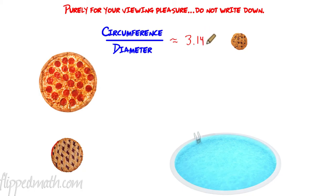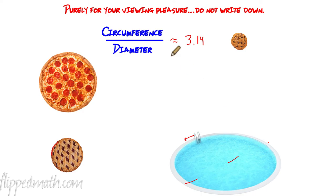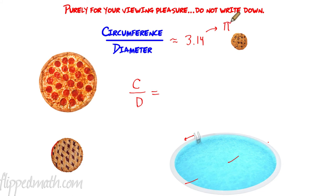That number was 3.14. Depending on how well they measured it might be slightly different, but it was true for every circle. They walked around, measured all the way around the outside, measured across the very middle, and circumference divided by diameter always worked out to 3.14. They gave this number a special name — pi. It's spelled P-I, it's a Greek letter. Instead of writing 3.14 every time, they just write that symbol, and it means 3.14.